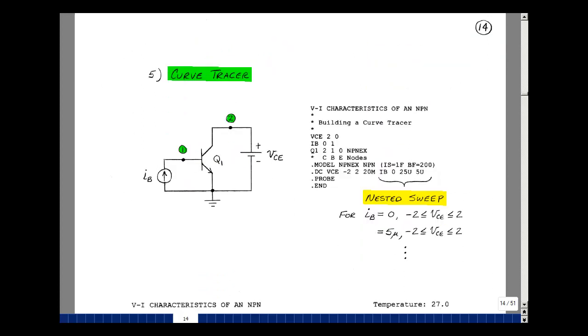Next, let's build a curve tracer like we did for a diode. Since my curves depend on the base current, let me use a current source to pump a base current in here, and I'll put a voltage across the collector emitter. Let's specify our SPICE command.